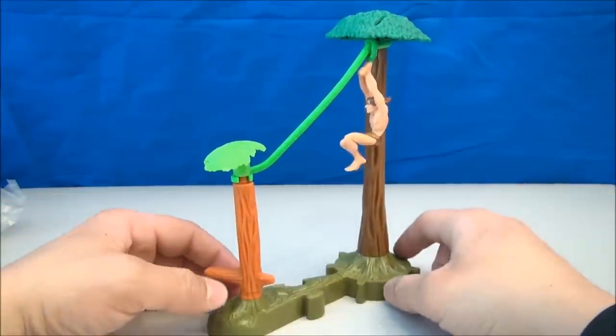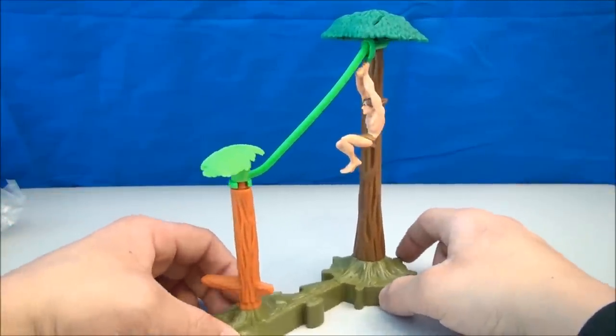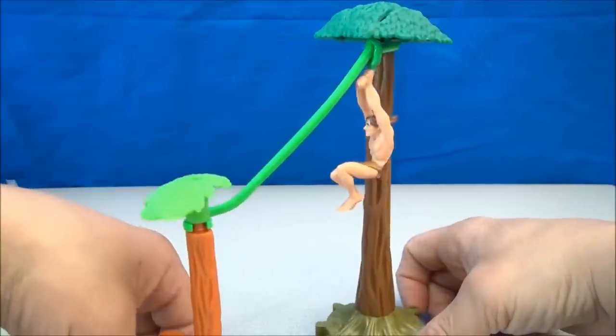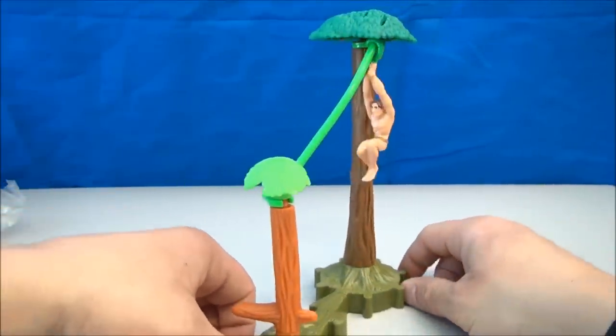Alright, we got this all built up. I got a couple of trees, a little jungle flooring. We got Tarzan. Check him out. He's hanging there. His hair is flowing. So is the loincloth.